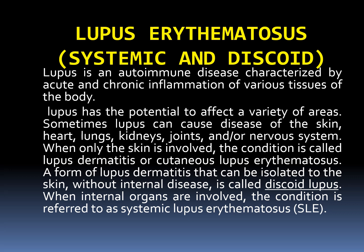Lupus erythematosus: systemic and discoid lupus is an autoimmune disease characterized by acute and chronic inflammation of various tissues of the body. Lupus has the potential to affect the skin, heart, lungs, kidneys, joints, and nervous system.